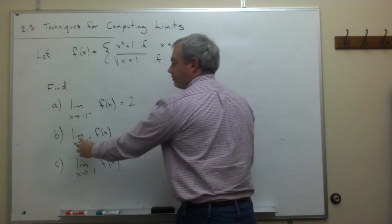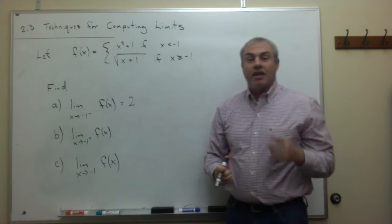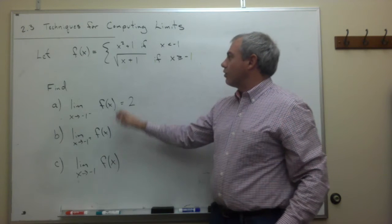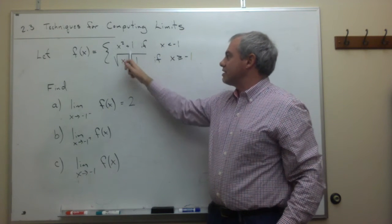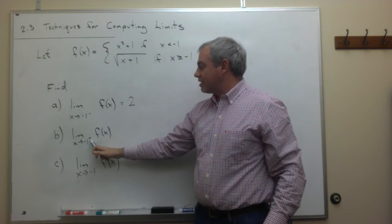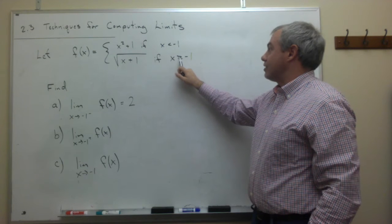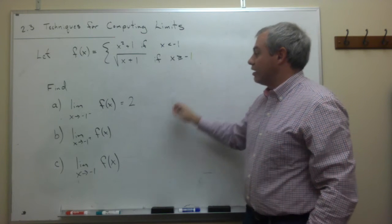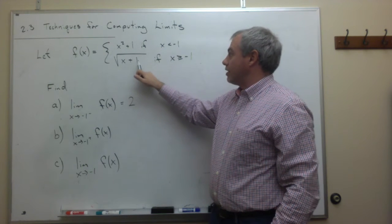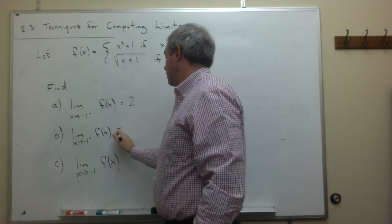For part b, I'm taking the limit as x goes to minus 1 from the right. On the positive side of minus 1, x is greater than or equal to minus 1, so I use the square root of x plus 1. Plugging in minus 1: minus 1 plus 1 is 0, and the square root of 0 is 0.